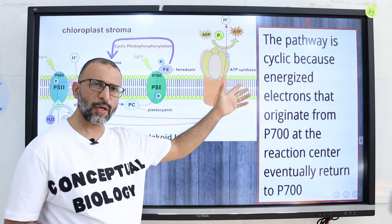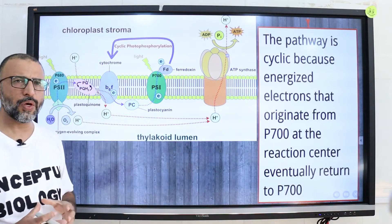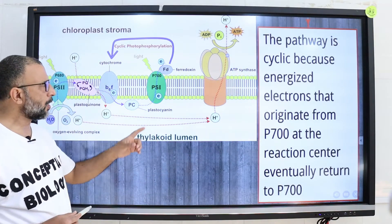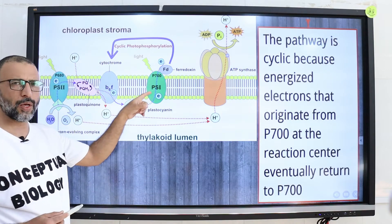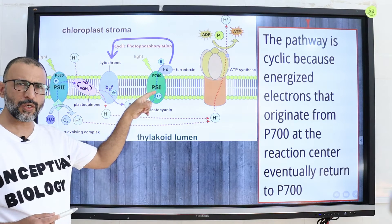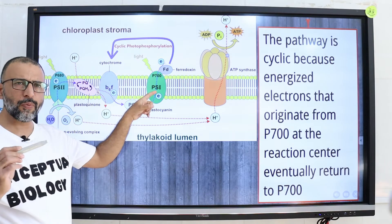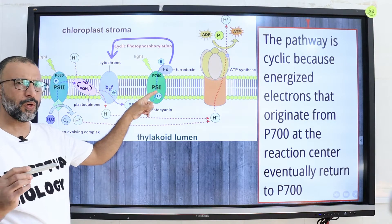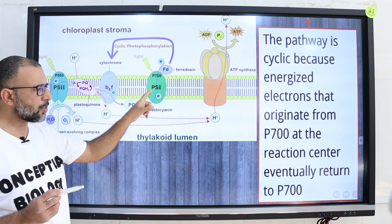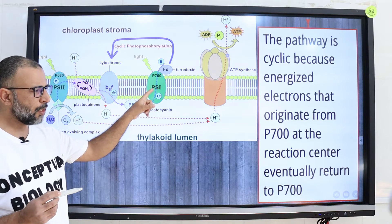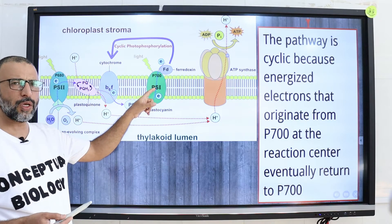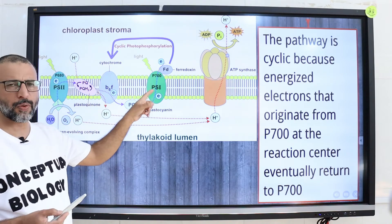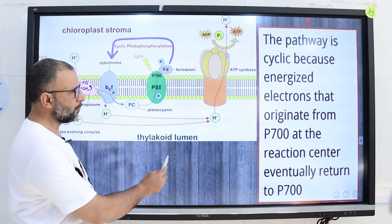The pathway is cyclic because the energized electrons that originate from photosystem 1, from the P700 chlorophyll A molecule at the reaction center, eventually return back to the P700 chlorophyll A molecule.